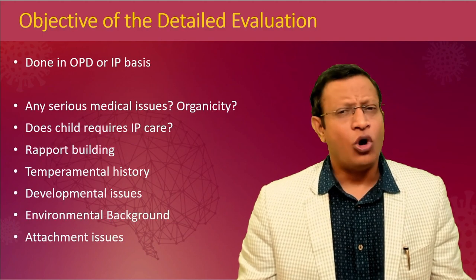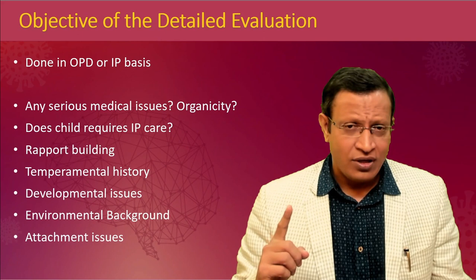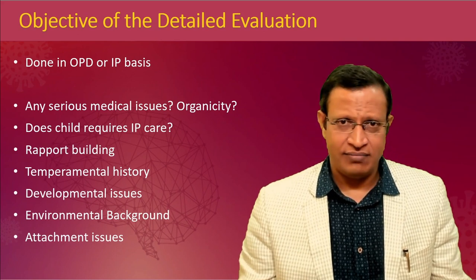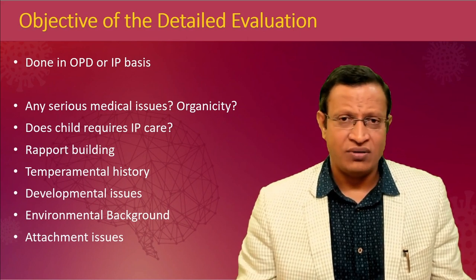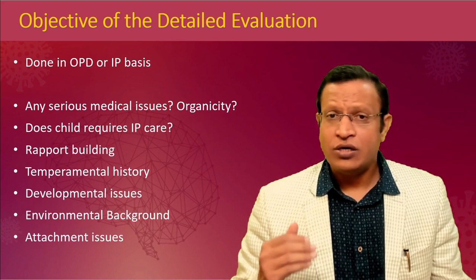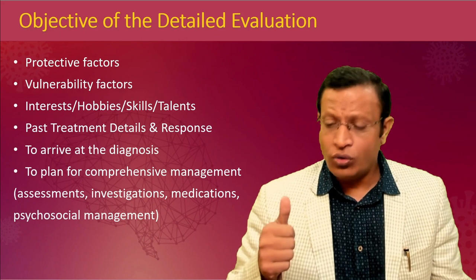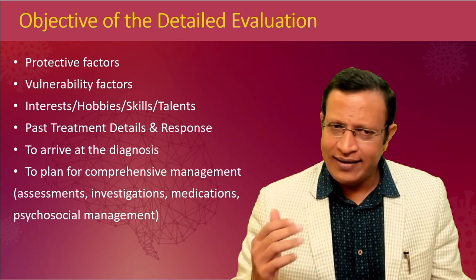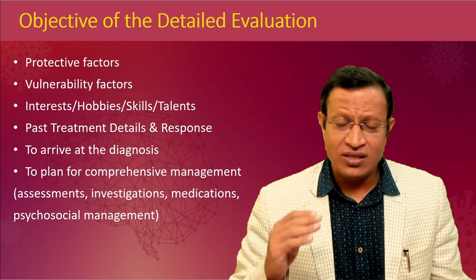The detailed evaluation is done either in the outpatient or inpatient department. First and foremost, we have to know whether the child has a serious medical illness or any organicity. Does the child require inpatient care? Are there any safety issues — is somebody abusing them physically or sexually? Detailed evaluation gives an opportunity for rapport building, knowing the temperamental history, environmental background, and attachment issues. Never forget to look for protective and vulnerable factors, the child's interests, hobbies, skills, and talents. Also check for past treatment details and response to arrive at a diagnosis.